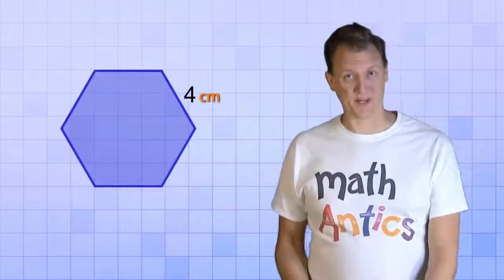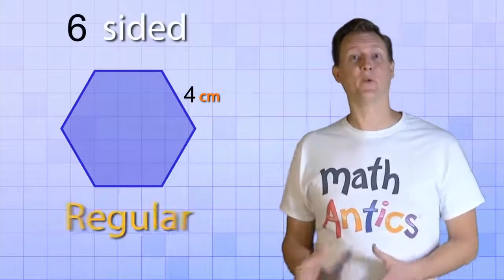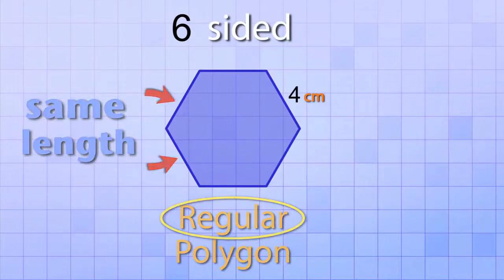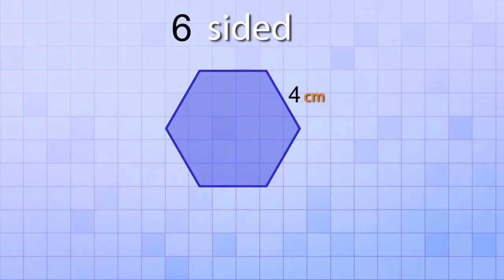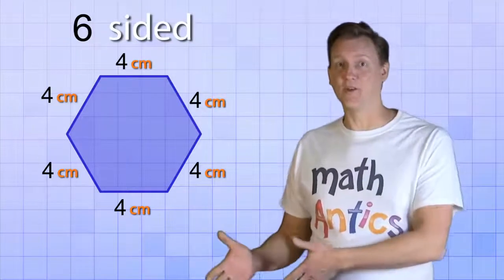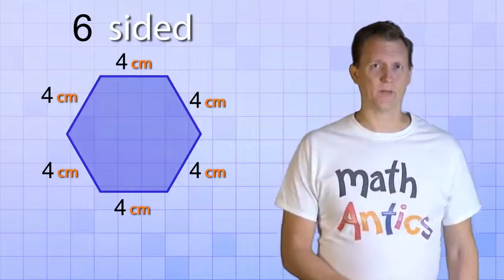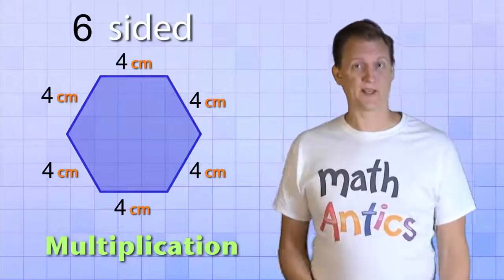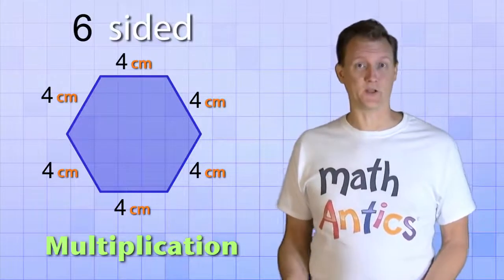Here's another good example. This is a six-sided, regular polygon. A regular polygon means that all its sides are exactly the same length. And that's good, because this diagram only shows the length of one side. But since the polygon is regular, we know that all the other sides are also 4 centimeters long. Now, we could just add up all the sides like we did before, but since they're all the same, we can use multiplication as a shortcut. That's because multiplication is really just repeated addition.